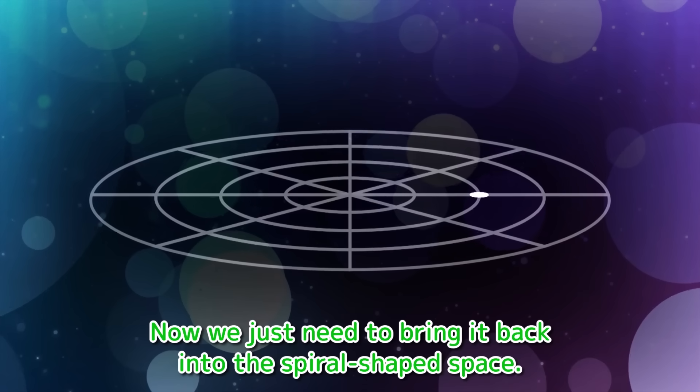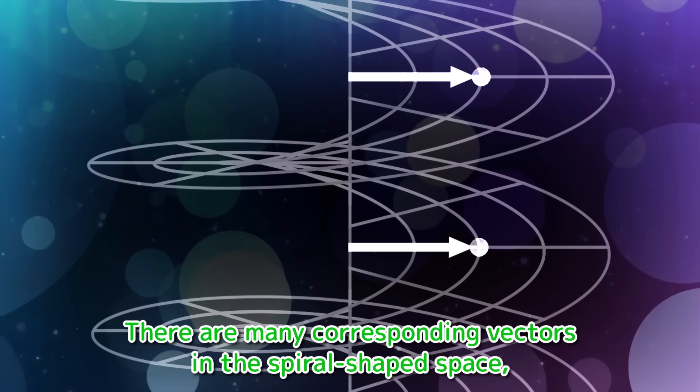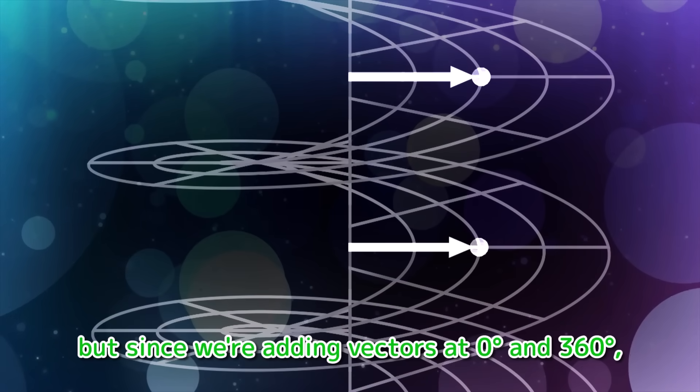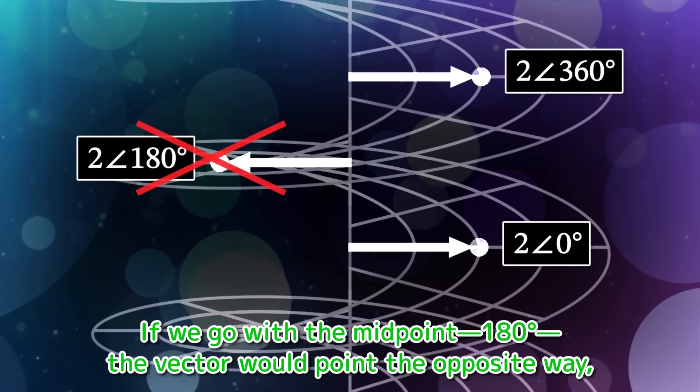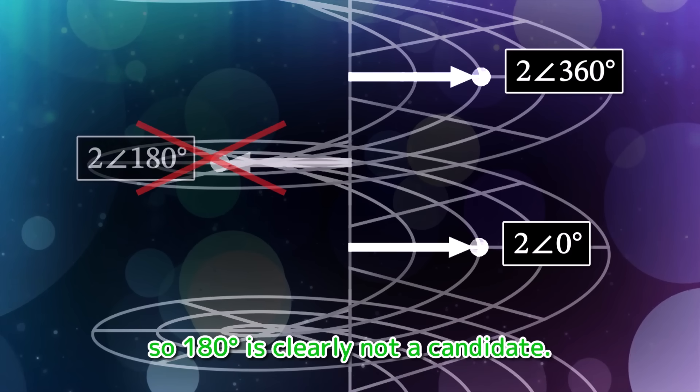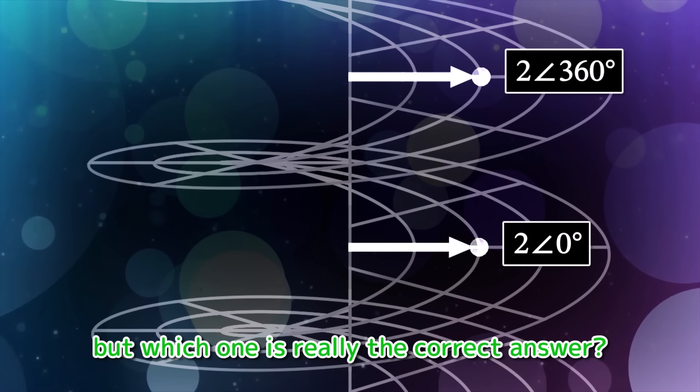Very well. If you're doubtful, let's assume that addition is possible in this space. We will start with the vector 1∠0° and move 360 degrees from there. Then we arrive at the vector 1∠360°. So what happens if we add these two vectors together? Hmm, I wonder what happens. Adding two vectors in this space?